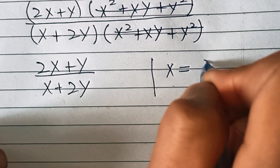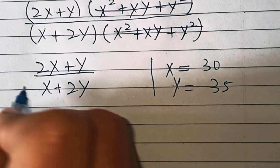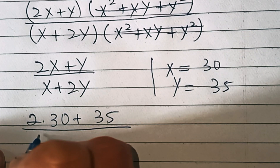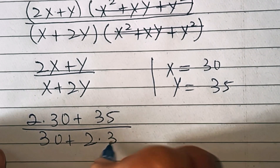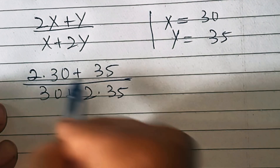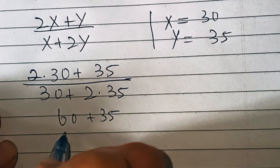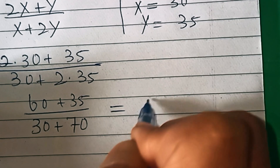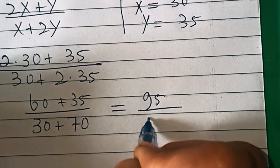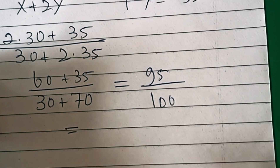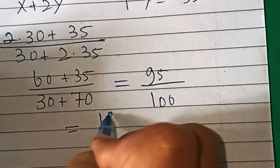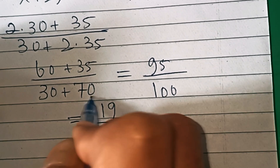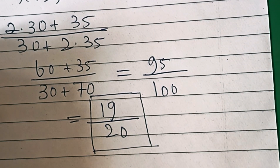Recall x equals 30 and y equals 35. Substituting: (2×30 + 35) / (30 + 2×35) = (60 + 35) / (30 + 70) = 95/100. Dividing both by 5 gives 19/20, which is our final answer. Keep supporting us and thanks for watching — see you in the next video.